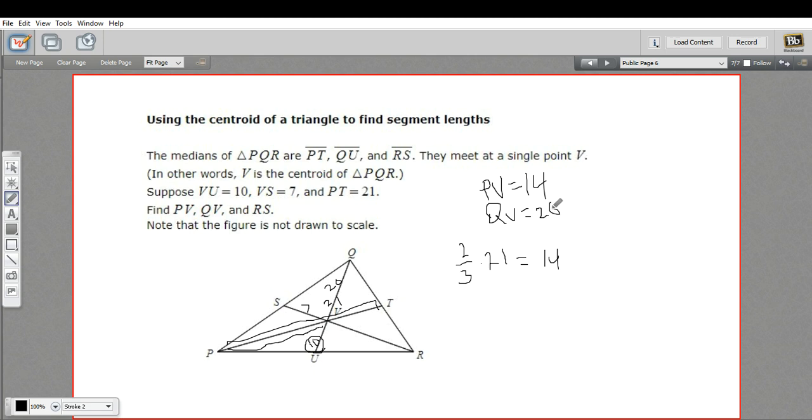It says RS is what we want next. So R to S, that's this whole length. We've got the shorter arm here at 7, so the longer arm is going to be twice that. That'll be 14, and then the whole length is 7 plus 14, or 21. So RS is 21. That's a little bit of work with the centroid.